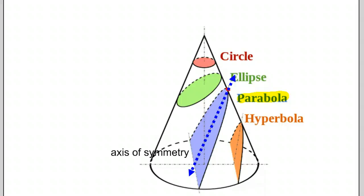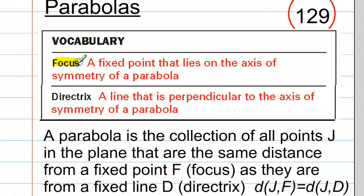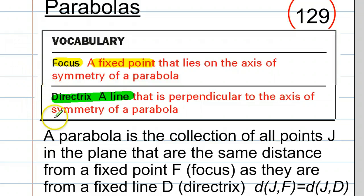So let's take a look at the notes on page 129. We have to add these two new concepts or components. One is the focus — the focus is a fixed point that lies on the axis of symmetry of a parabola. And the other one is a directrix, which is a line that is perpendicular to the axis of symmetry of a parabola. One important thing to note, and you might want to add this onto your notes, is that neither the focus nor the directrix is on the parabola or passes through the parabola, like the vertex and the axis of symmetry do.